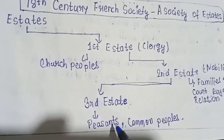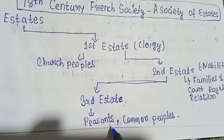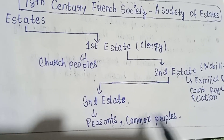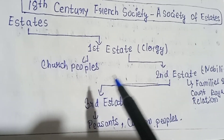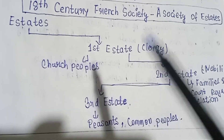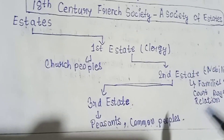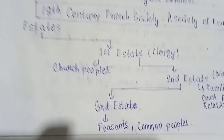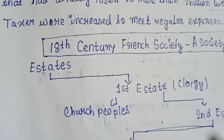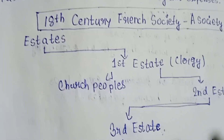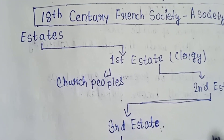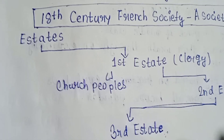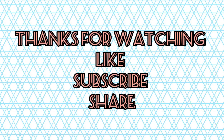The Third Estate people were peasants, farmers, common people, doctors, artists, and workers — all those were Third Estate people. So friends, that is all for today. Part 2 is coming. Thanks for watching.